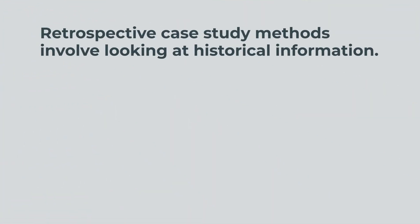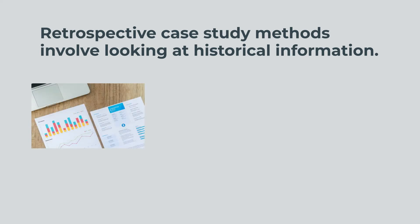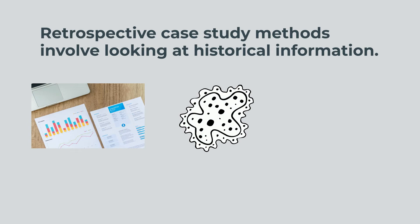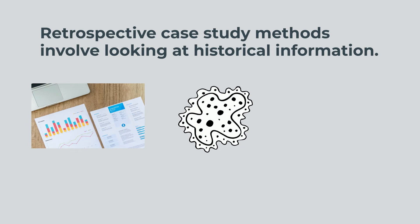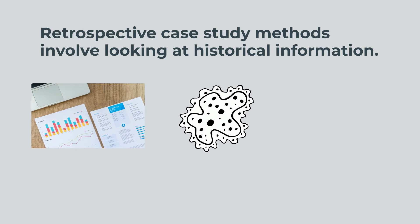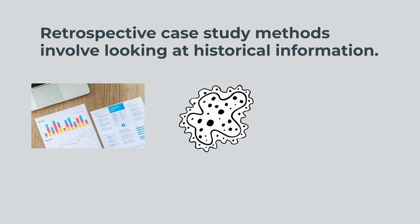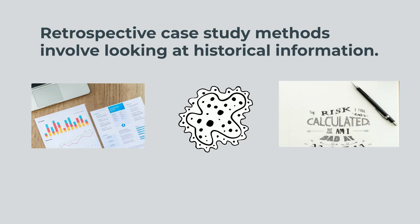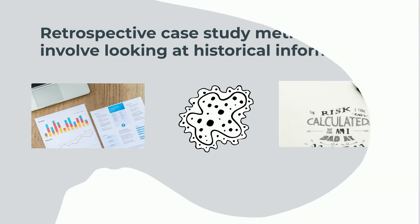Retrospective case study methods involve looking at historical information. For example, researchers might start with an outcome, such as a disease, and then work their way backward to look at information about the individual's life to determine risk factors that may have contributed to the onset of the illness.